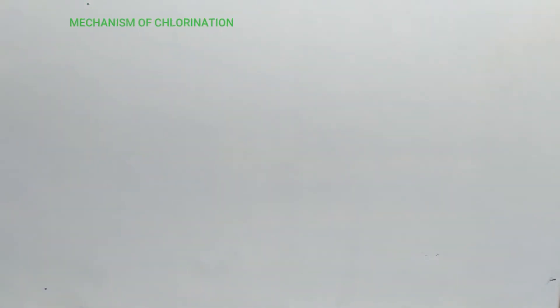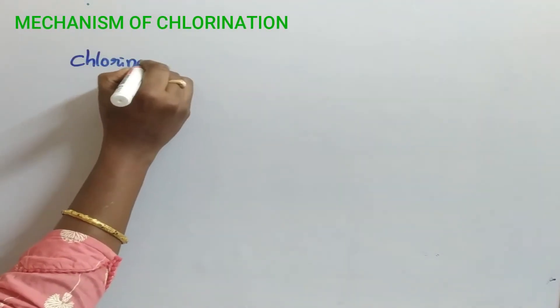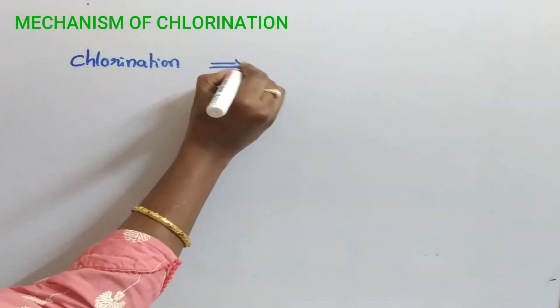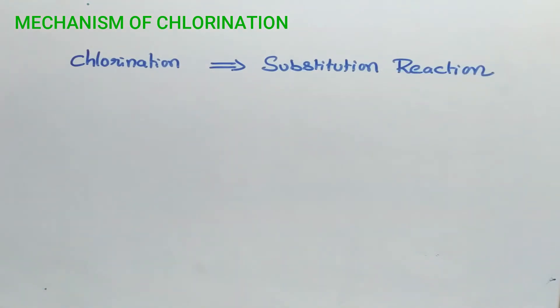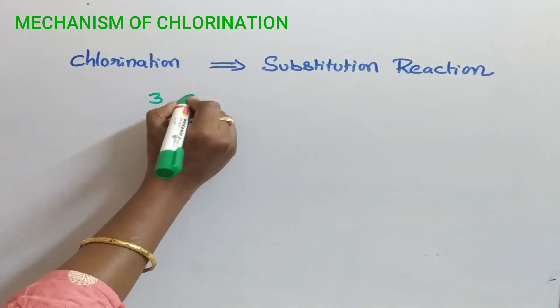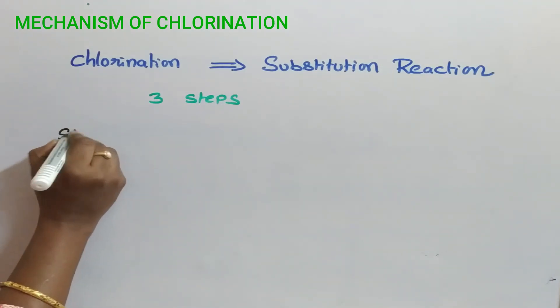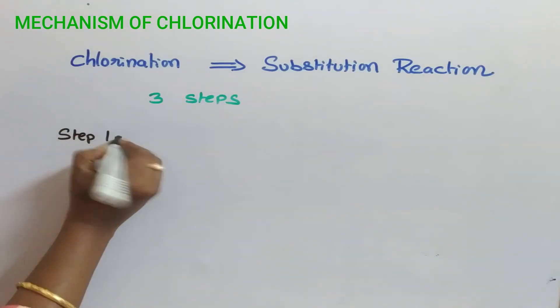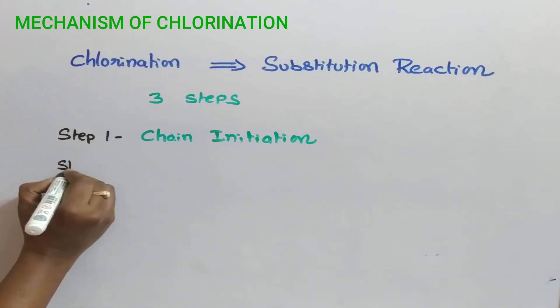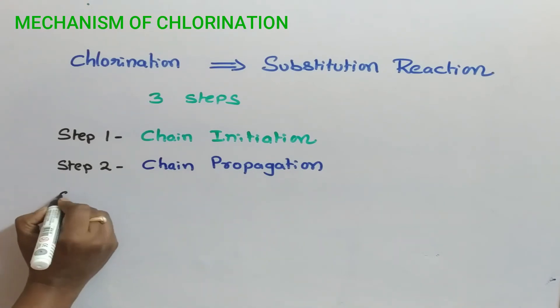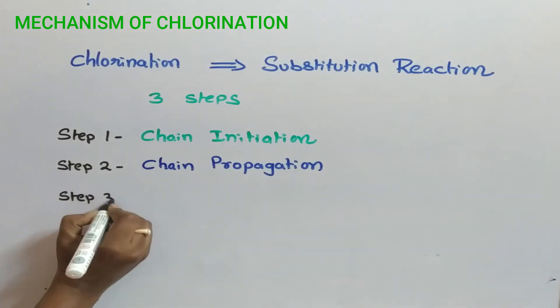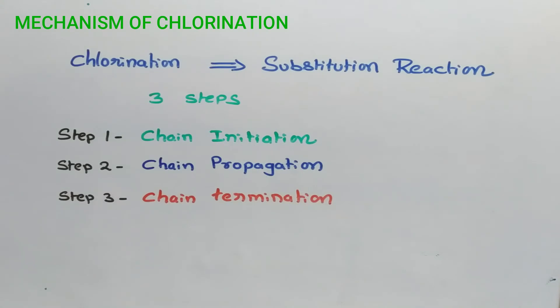Next, let us see the mechanism. Chlorination is a substitution reaction. This involves three steps: Step 1 chain initiation, Step 2 chain propagation, Step 3 chain termination. Let us see the stepwise mechanism of chlorination.